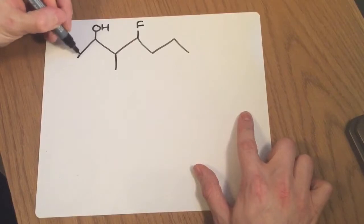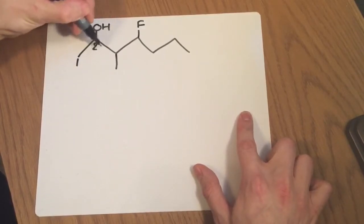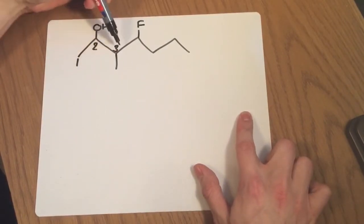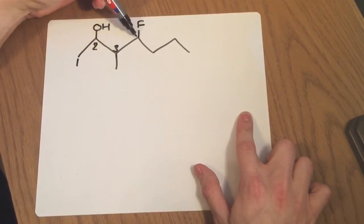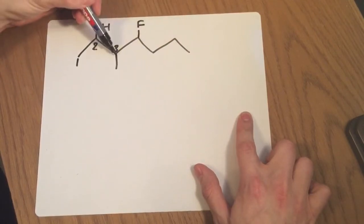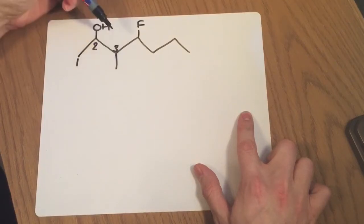So I can see I've got my first carbon here at the end, so I've got one, two, three. Now I can go in either direction here, I can either go four, five, six, seven, or I can just go four and that would be the end of the chain. But of course if I just go four here that's not going to be the longest continuous chain.